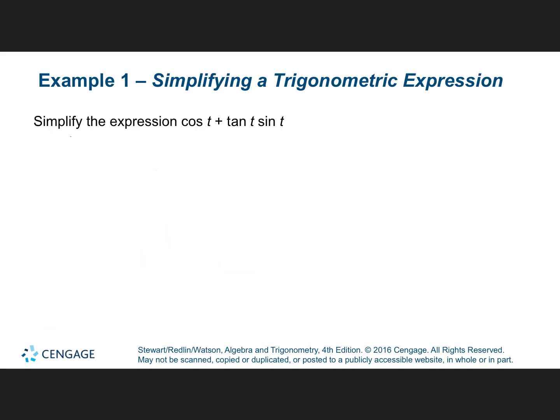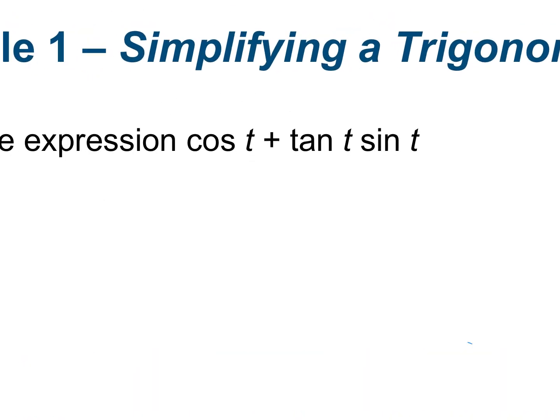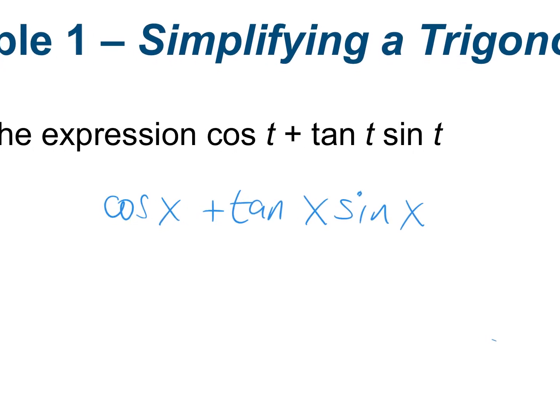What I want you to do: I'm going to write cosine x plus tangent x times sine of x. Every time you have one of these problems, you can change whatever Greek letter they give you into x or alpha — that's fine. But where it says to simplify, what does simplify mean? To make smaller, to make simpler. There's a lot going on here — we have multiplication and addition.